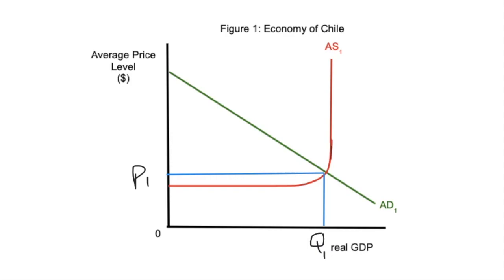It's called the Keynesian Rule of Nine. What are the nine components? Average price level — one. Currency — two. P1 — three. Zero, the origin, don't forget it — four. Q1 — five. Real GDP — six. AD1 — seven. AS1 — eight. And the last one? Of course, it's the title — always label it Figure 1, because if you have to draw another diagram you can say Figure 2, and in your writing refer to Figure 1 and Figure 2. Make it about the economy of a particular country. That is the Keynesian Rule of Nine.